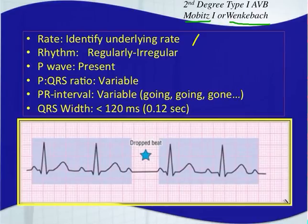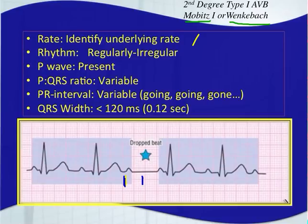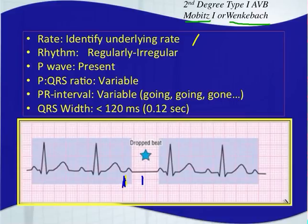Your P wave is present. Your P-to-QRS ratio is variable — you have P waves that don't conduct QRS complexes; there is a dropped beat. You have a P wave but no QRS complex. The other rhythms we talked about that had dropped QRS complexes, such as sinus arrest or sinus block, didn't have P waves present — they had a flat isoelectric line. Here we do have a P wave present, making this different. There's a block between the atria and ventricles where the atria depolarized but the ventricles did not follow.